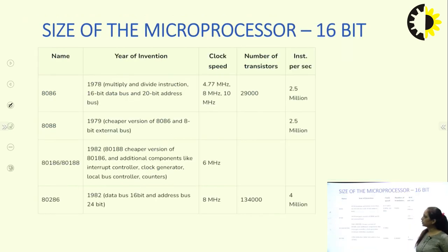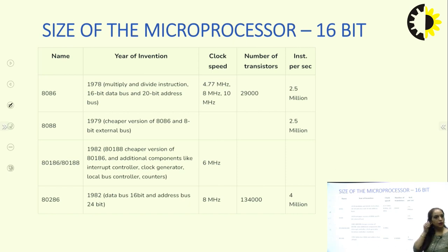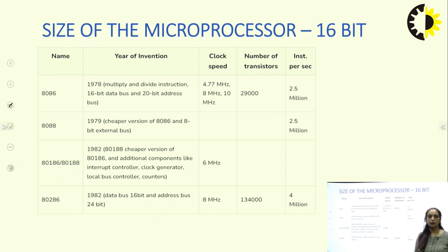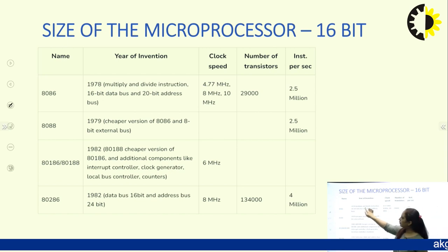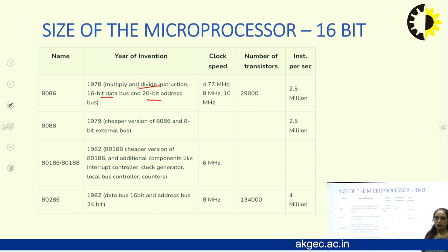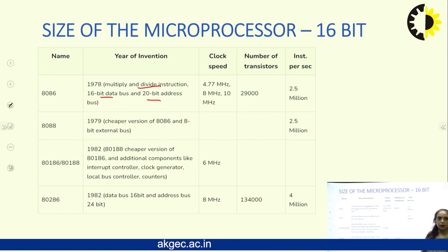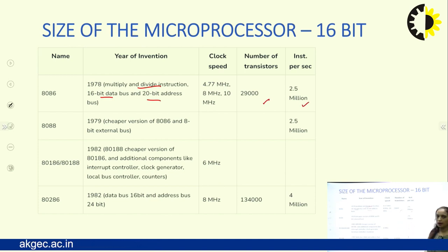The first 16-bit processor, the Intel 8086, was invented in 1978. It has the ability to multiply and divide two numbers directly — in 8085, we only have add and subtract instructions. The 8086 has a 20-bit address line and a 16-bit data line, works on clock frequencies of 4.77, 8, and 10 megahertz depending on the version, uses 29,000 transistors, and can process 2.5 million instructions per second.